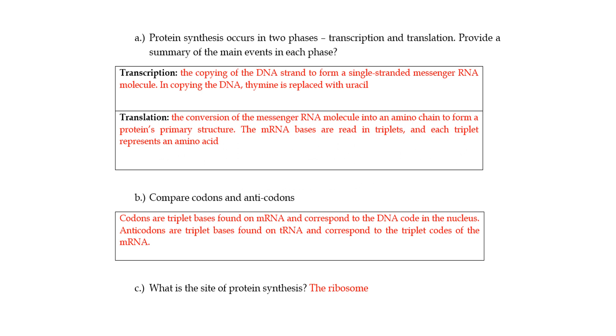Okay, so this is 6.2, which is about protein synthesis. The first question is that protein synthesis occurs in two phases - transcription and translation - please provide a summary of the main events in each phase. I didn't really specify how many points you should give here, and I suggest that if you're writing this in your workbook, you should be a bit more detailed in your answer than I am here.